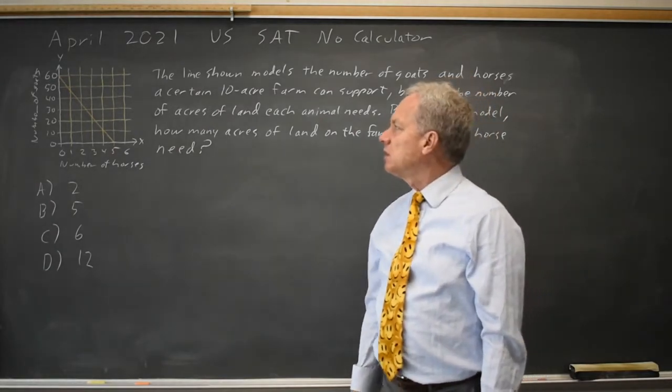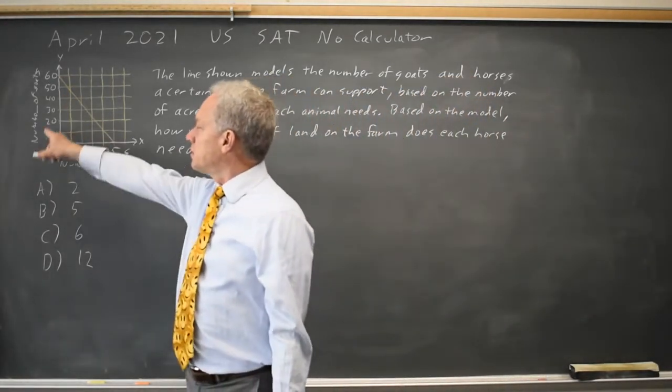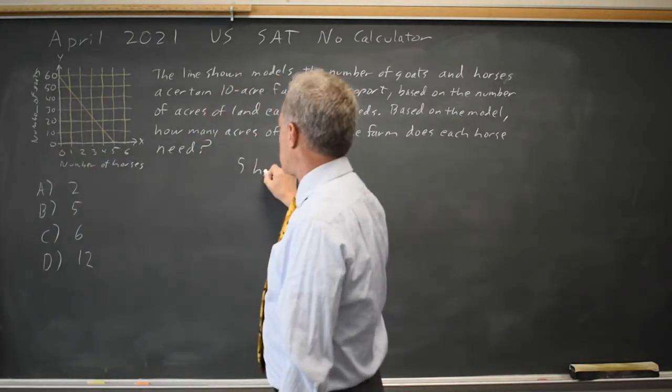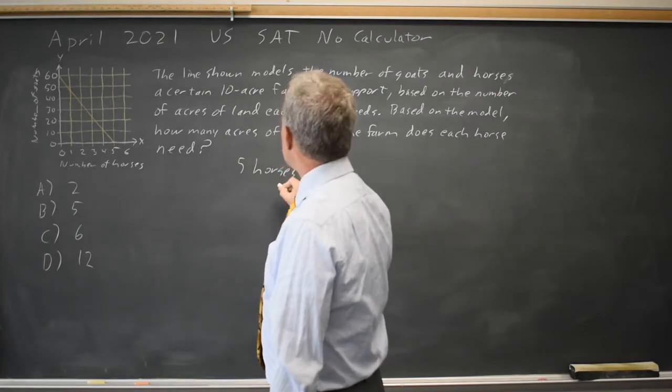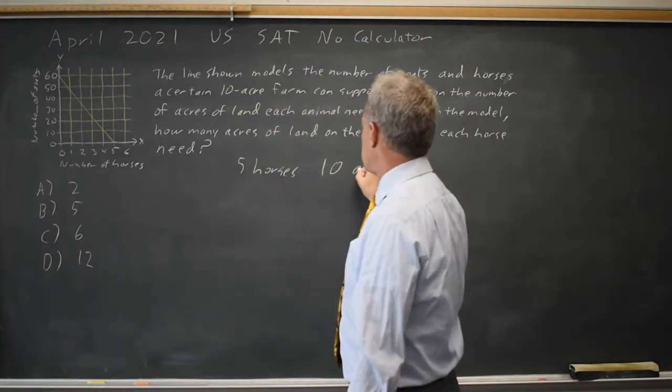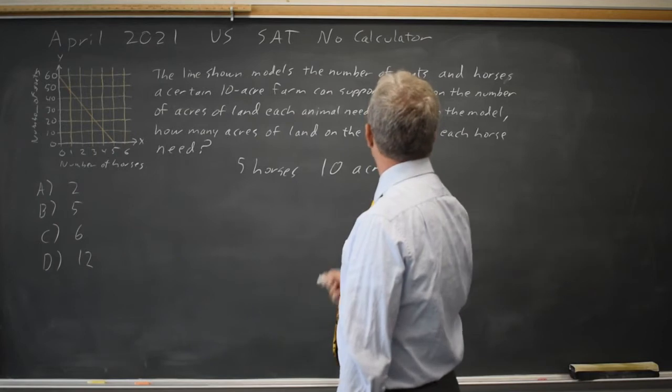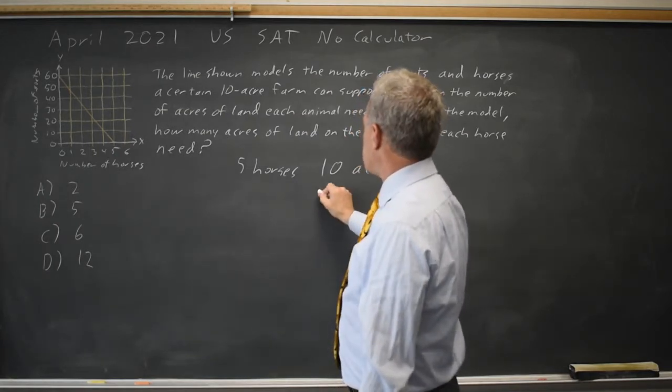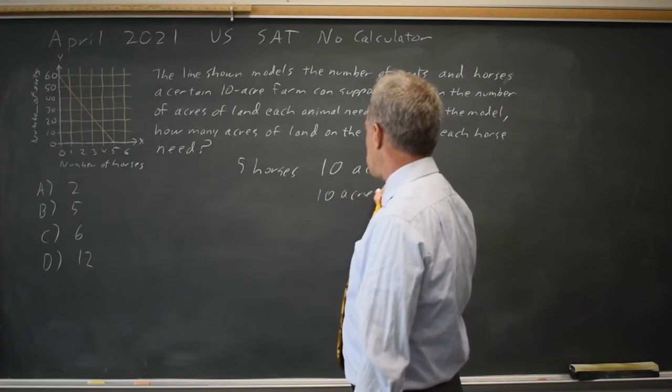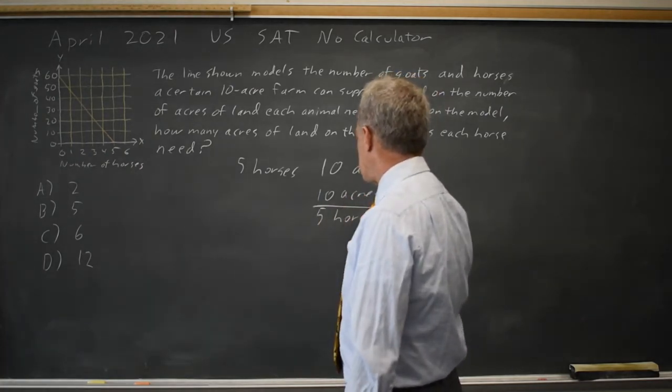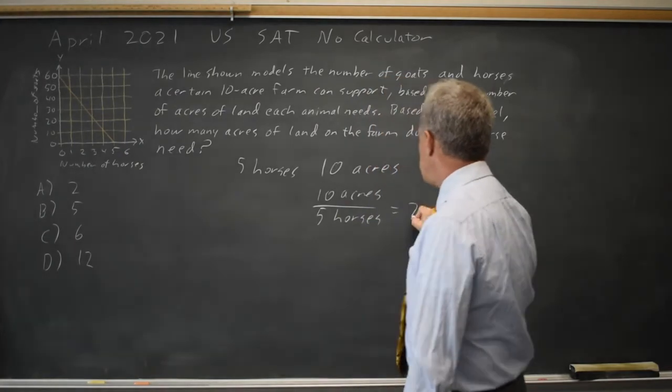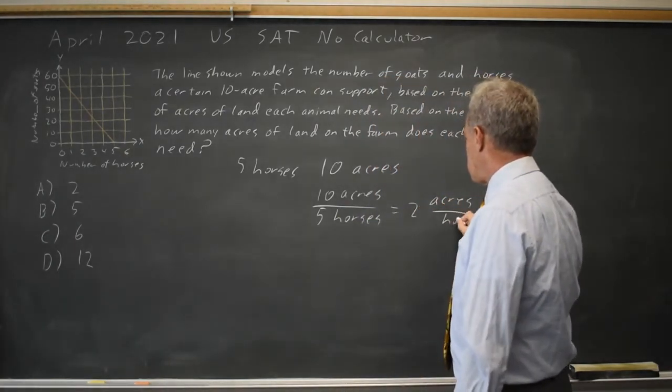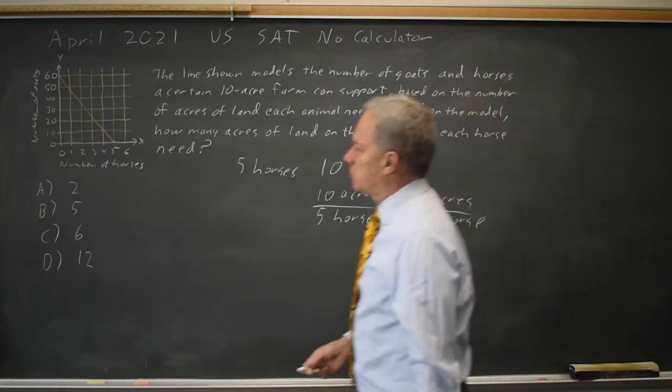The way to read that is if you have 0 goats, you can support 5 horses on a 10-acre farm. So that's acres per horse: 10 acres over 5 horses equals 2 acres per horse. Which is choice A.